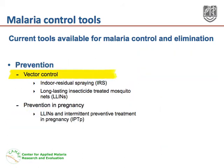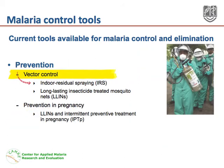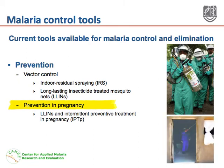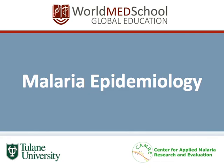The primary tools for preventing malaria transmission include indoor residual spraying and long-lasting insecticide-treated mosquito nets, both of which are highly effective. Malaria during pregnancy causes morbidity for the mother and increased risk of adverse birth outcomes such as low birth weight, especially in the first two pregnancies. The primary tools for limiting malaria in pregnancy are the use of long-lasting insecticide-treated nets and intermittent preventive treatment in pregnancy, or IPTp. Thank you for studying with World Med School.